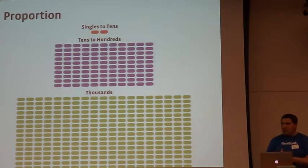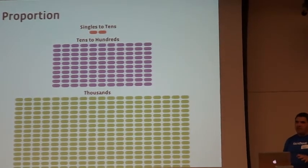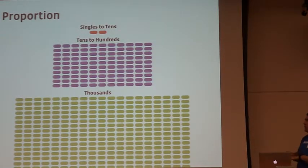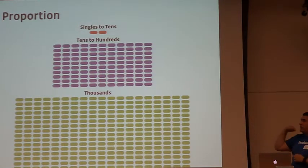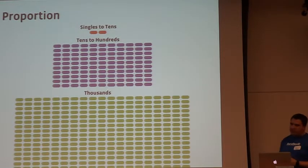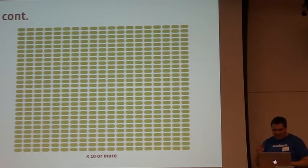In terms of scale: L4 load balancers are singles to tens per cluster — usually 6 or 10. They're mostly network-bound rather than CPU-bound since they only forward packets. L7 load balancers are tens to hundreds — typically around 100-150 per cluster. And then we have thousands of web servers. It's an insane number.